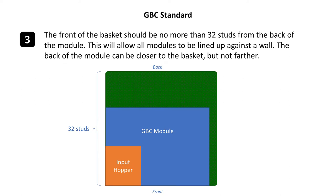I typically build my input hoppers on 32 by 32 or 16 by 32 base plates. By locating the in-basket at the front edge of the base plate, the back edge of the base plate shows me where the limit is for my module.